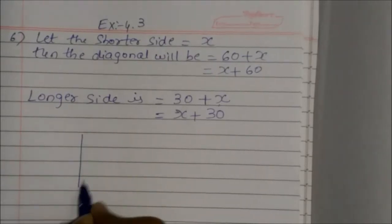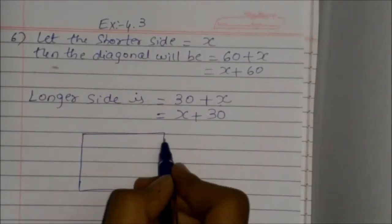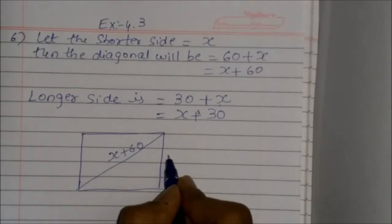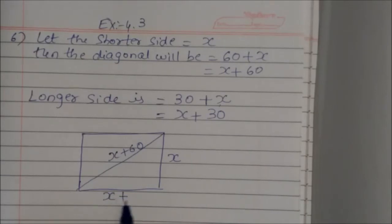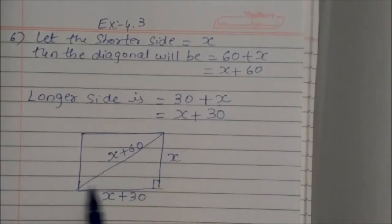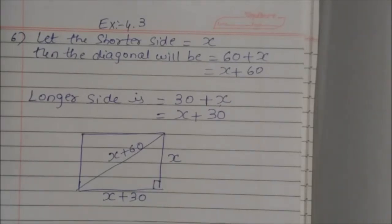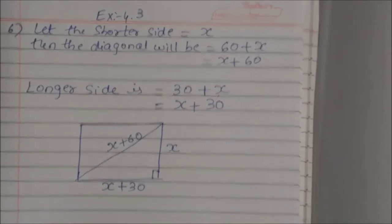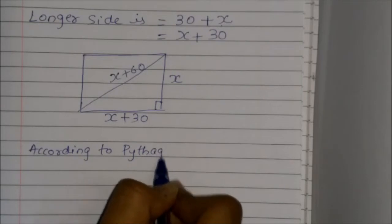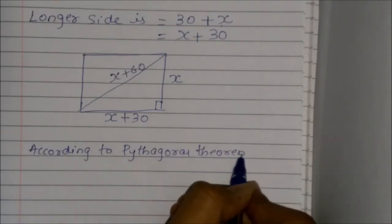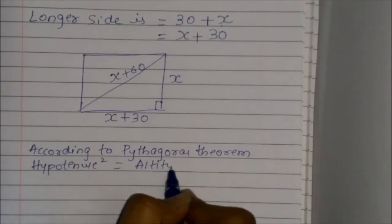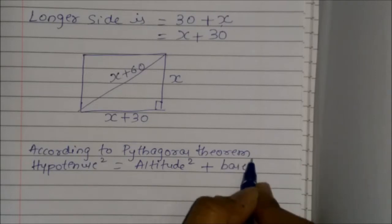If we imagine the figure, take a rectangular field. This is the diagonal, which is x plus 60. Let this be the shorter side and this be the longer side. Now here we can see a right-angle triangle, and we can find out using the Pythagorean theorem.